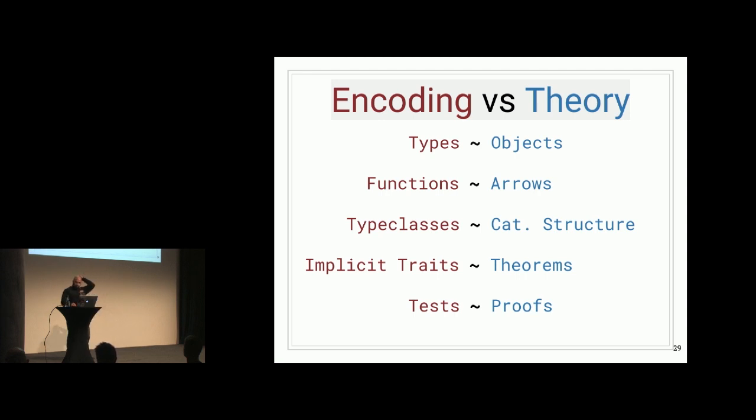And to quickly run over a couple other bits of encoding in Scala that maybe trip up a lot of people that are new to the language, we've seen that types are objects, functions are arrows. Type classes are a way to represent categorical structures, and implicit traits, or rather instances of traits that are implicit, are theorems that a said data structure corresponds with the categorical structure that we want to show. And then tests and laws, of course, are proof that that theorem holds.